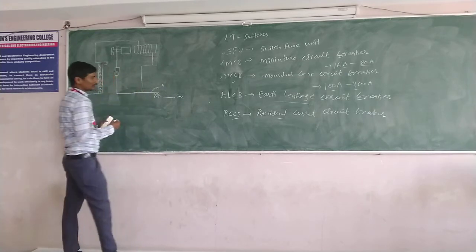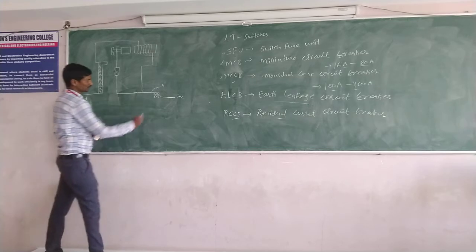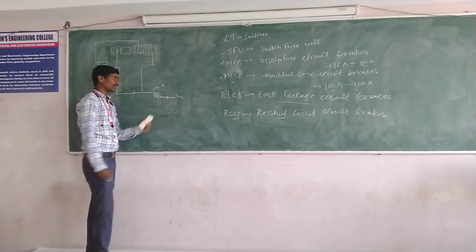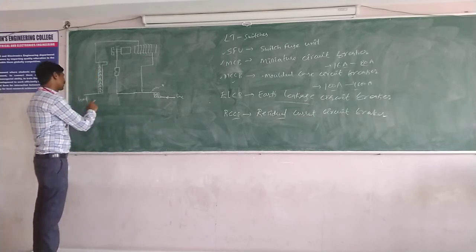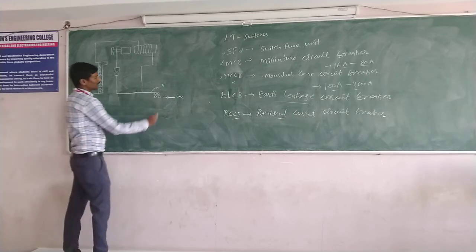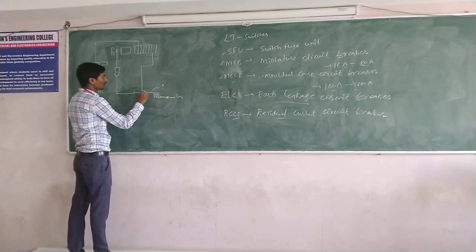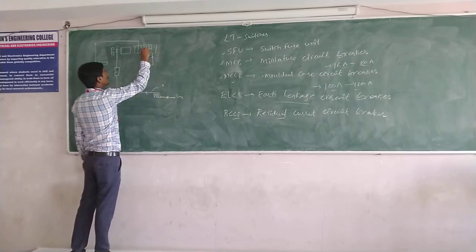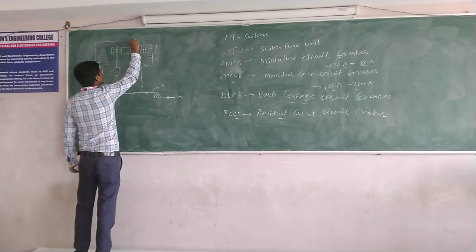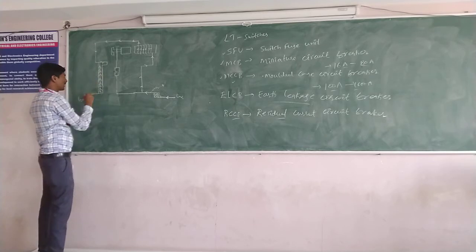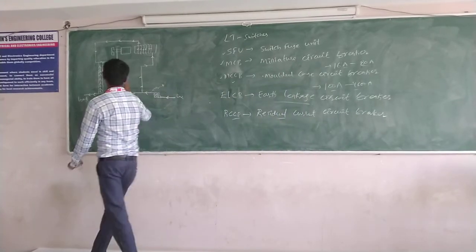I have already drawn a diagram for the MCB. This line is coming from the supply side and this is connected to the load. Whenever current is supplied, it will enter into the MCB. The MCB consists of two terminals — one connected to the supply side and one connected to the load side. Whenever supply is given, in normal operating condition the switch is closed and current flows through.